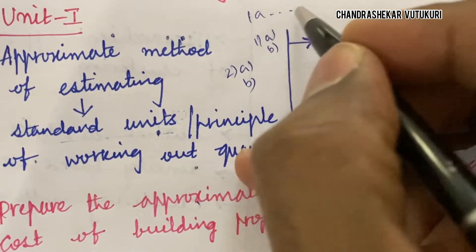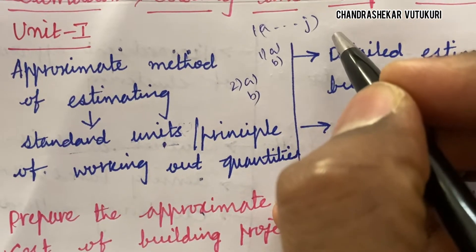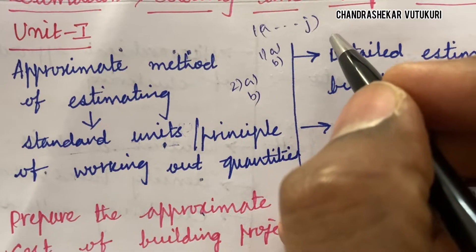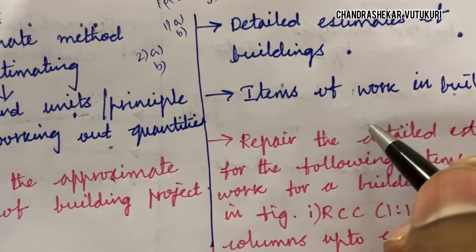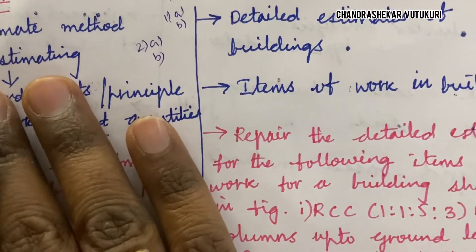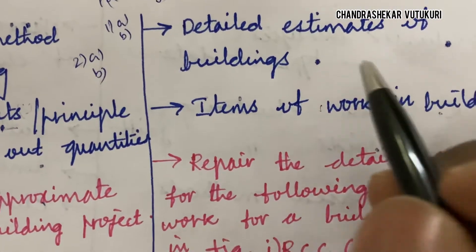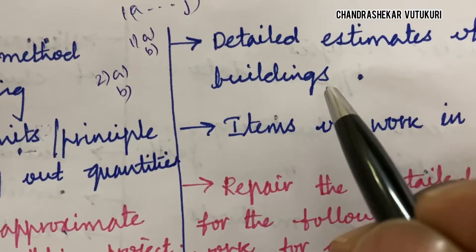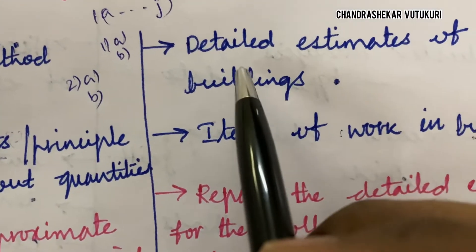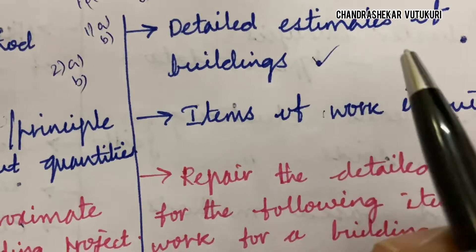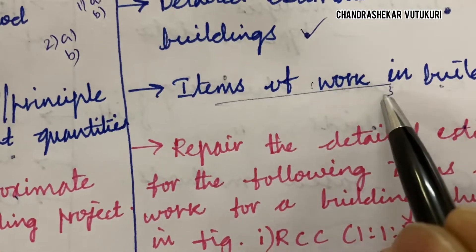From 1A to J, these are all short questions, which are a 2-3 mark combination and are mandatory. Questions 2A to B and 3A, 3B are optional — you can write either 2A to B or 3A to B. If you haven't gone through the paper pattern, please watch the video already done on that. Detailed estimates of buildings and items of work may also be a two or three-mark question.